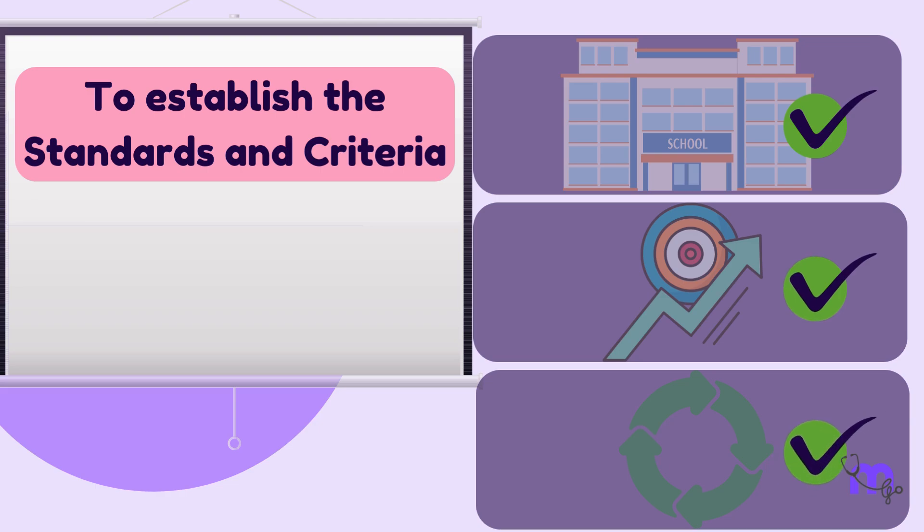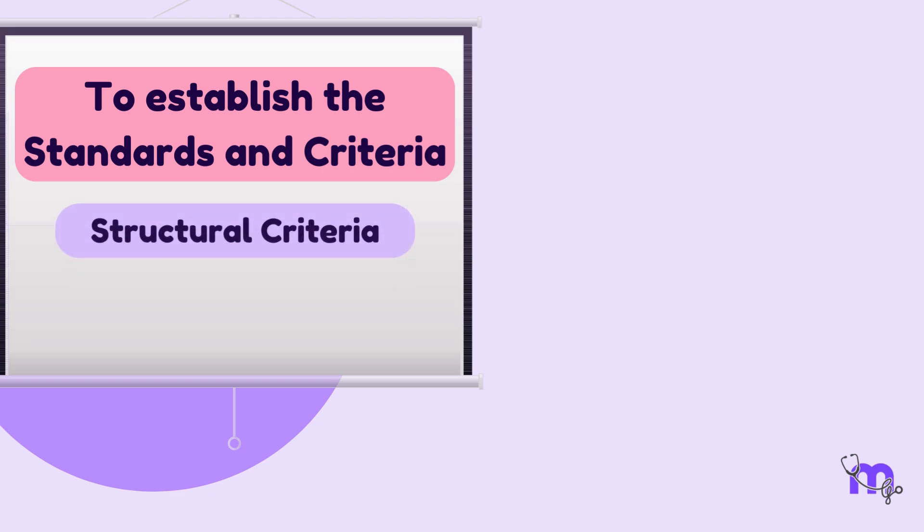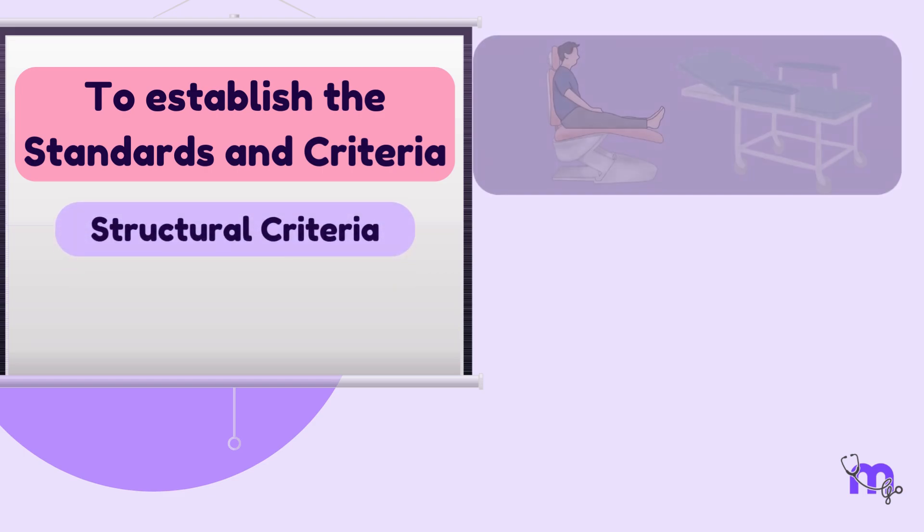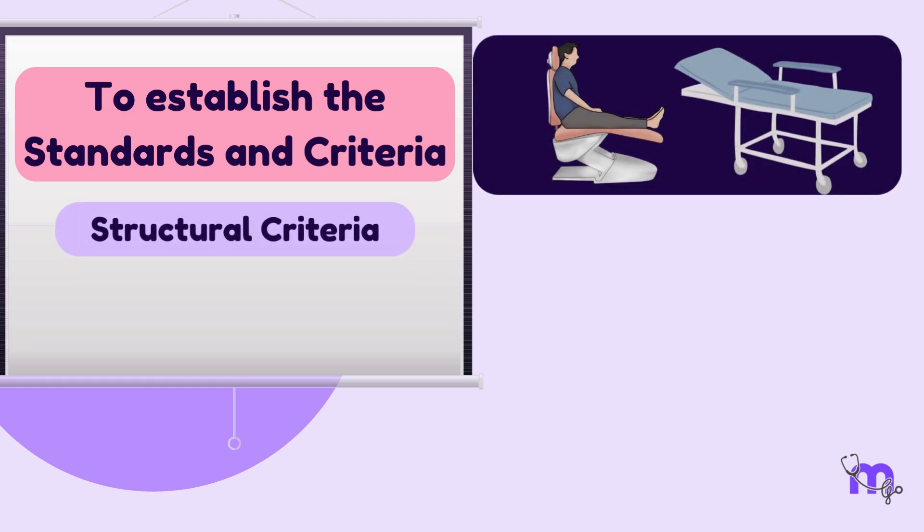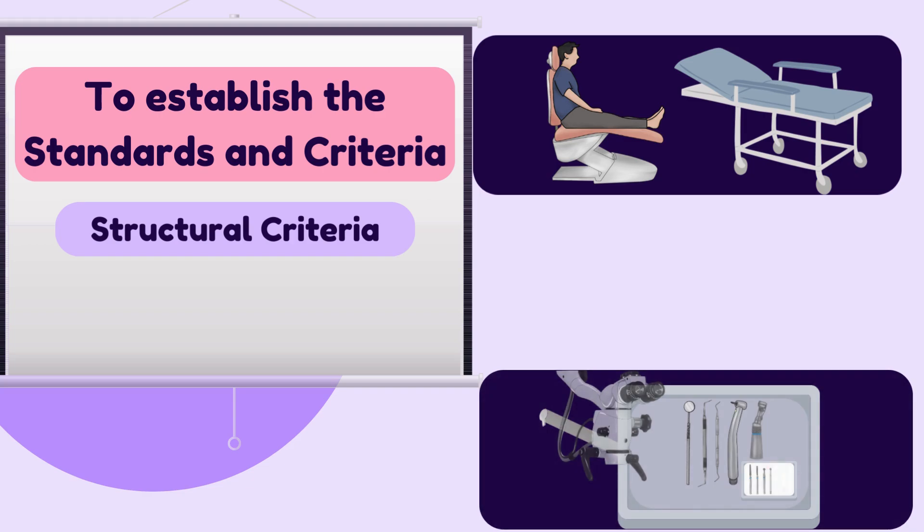This is important to determine how well the desired objectives have been attained. For structural criteria, we can have certain preferred types of physical facilities and equipment against which we can compare the facilities that were planned to be included in the program.